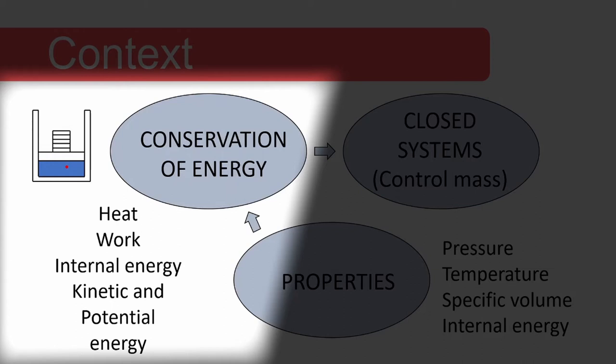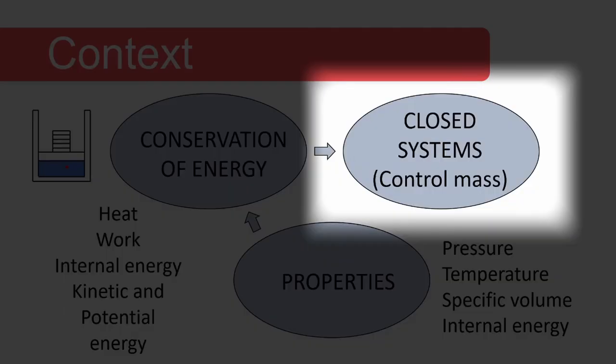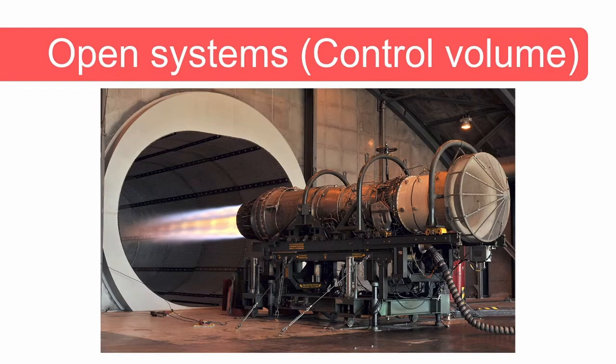Also, if the center of gravity of the control mass — shown here by the little red dot — moves during the process, we may also need to take kinetic and potential energy of the control mass into consideration. And lastly, we applied the first law to closed systems. In a closed system, there are no mass transfer across the system boundary, and therefore the name control mass.